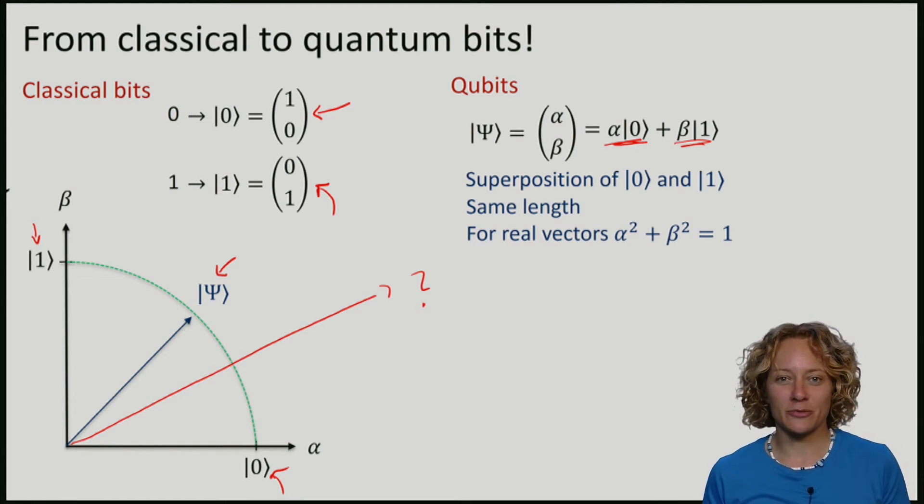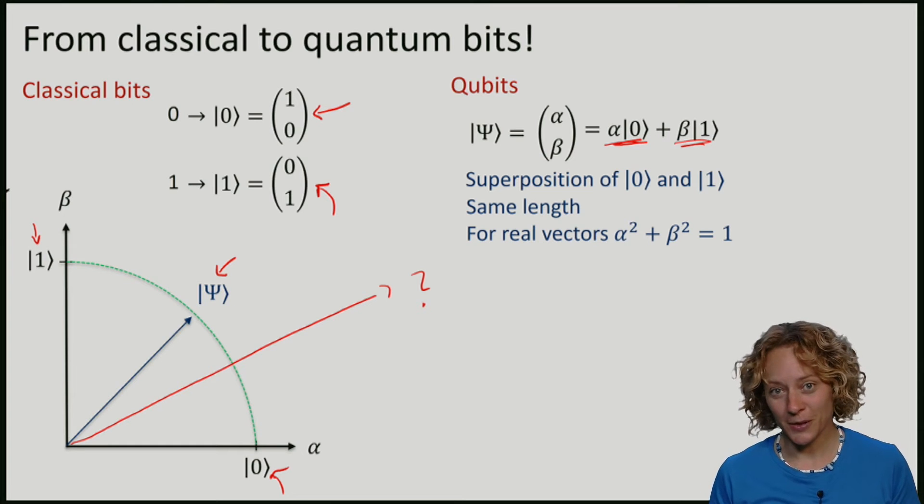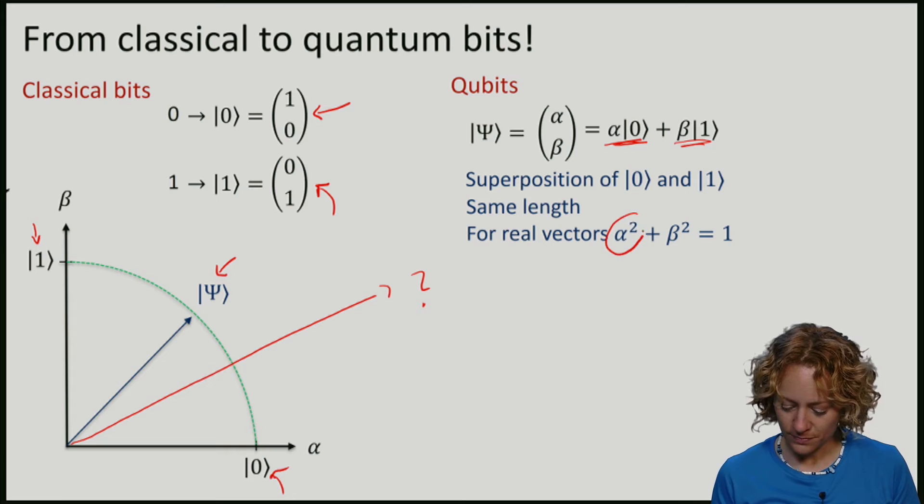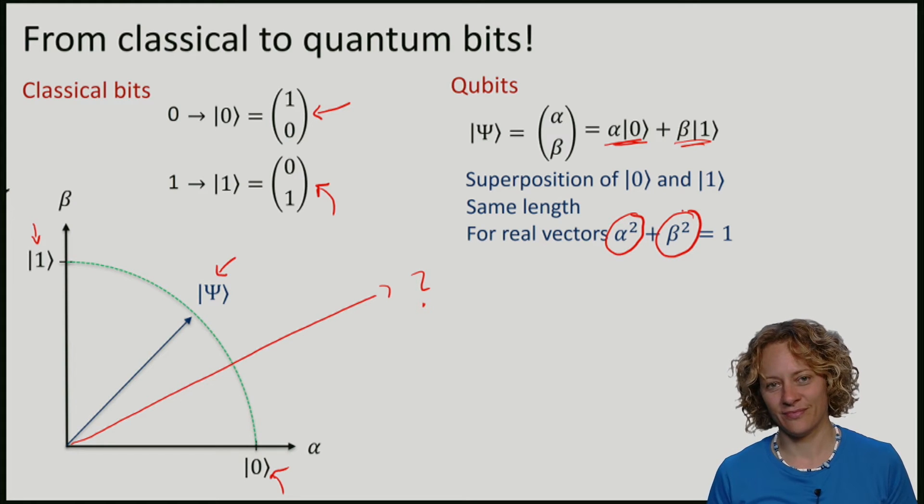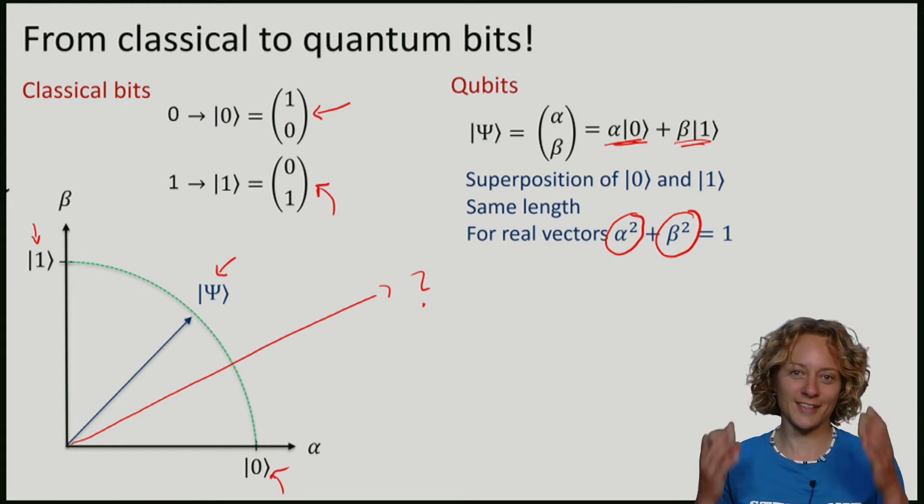So we will demand that our qubit also corresponds to the vectors that have length exactly 1. And if alpha and beta are real numbers, as I've drawn them here, that just means that the square of alpha plus the square of beta equals 1. So this is a qubit.